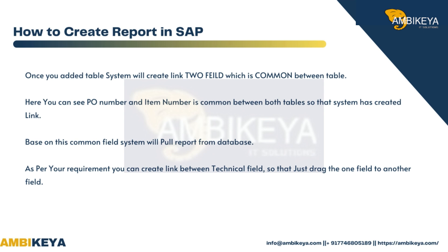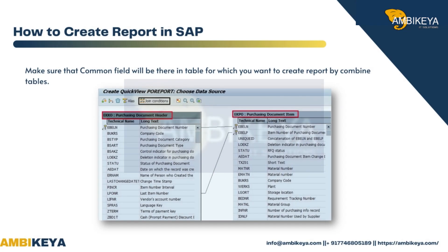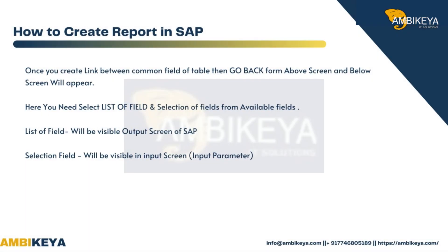So the system has created a link based on these common fields. The system will pull the report from the database as per your requirement. You can also create a link between technical fields by dragging one field to another field. Make sure that the common field exists in the tables for which you want to create a combined report.